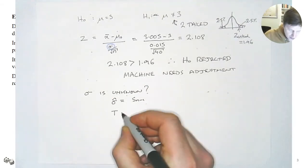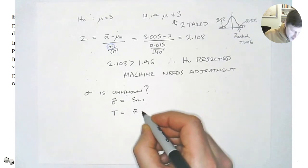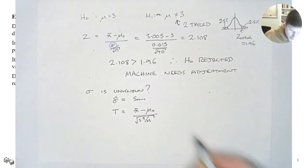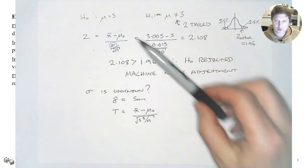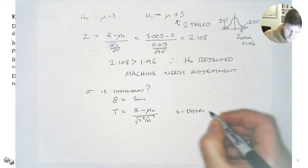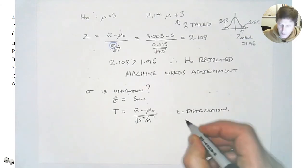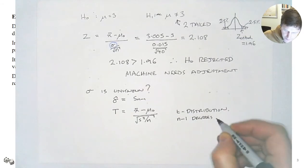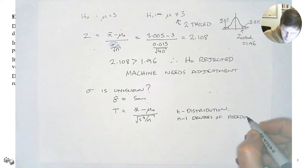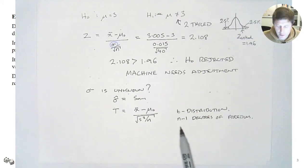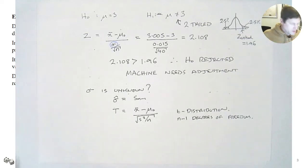When sigma is unknown and we use the estimated standard deviation, we have to use a different distribution. We now use t as our variable and write our equation accordingly. Instead of using z for the normal distribution, we use a t-distribution, which is a little different because it has degrees of freedom within it.